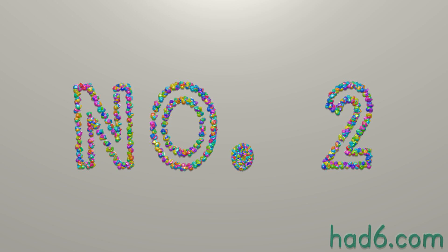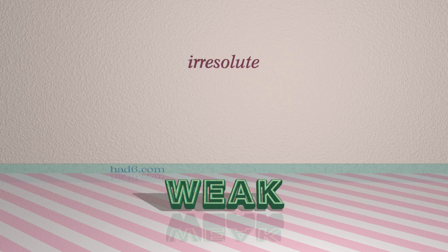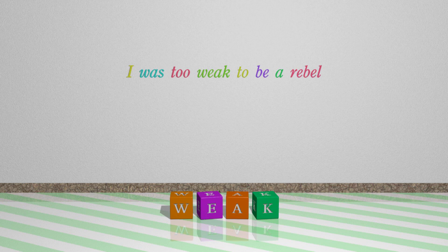Number 2: Weak, which means irresolute. For example: I was too weak to be a rebel.